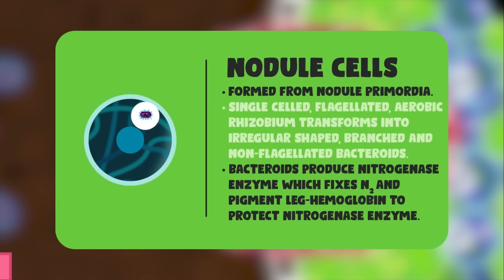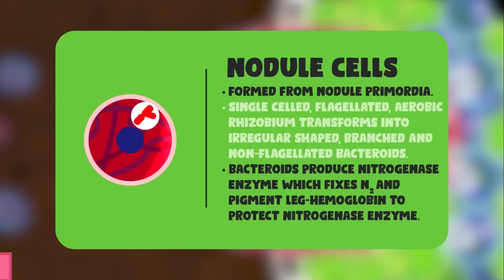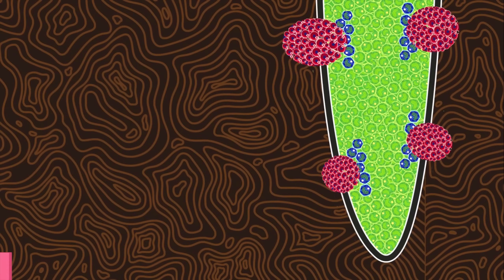These bacteroids produce an enzyme called nitrogenase, which is responsible for the fixation of dinitrogen into ammonia. But this enzyme is highly sensitive to the presence of oxygen and becomes inactive in its presence. To avoid this, the bacteria and the plant cells contribute to the formation of a pink-colored pigment called leghemoglobin, which acts as an oxygen scavenger to remove excess oxygen from nodule cells. This is the reason why the nodule appears pinkish in color.